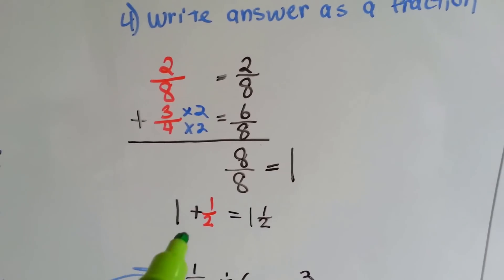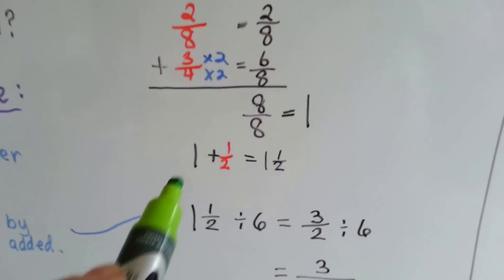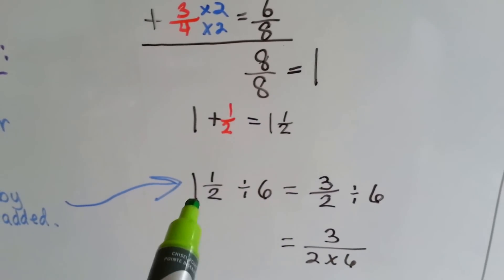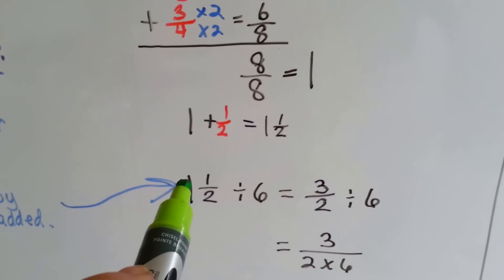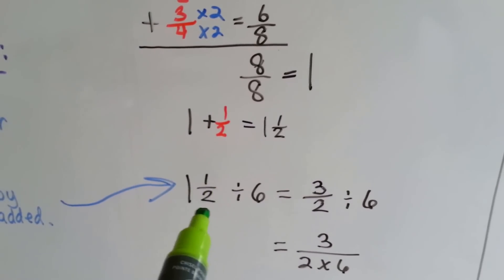So, now we have one and we still need to add this half and then divide the whole thing by six. One plus a half is one and a half. In order to divide it by six easily, we're going to turn it back into a fraction.